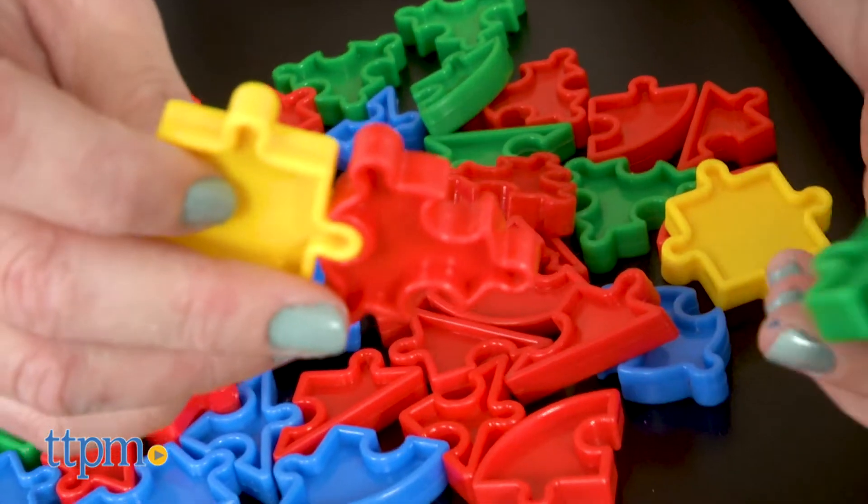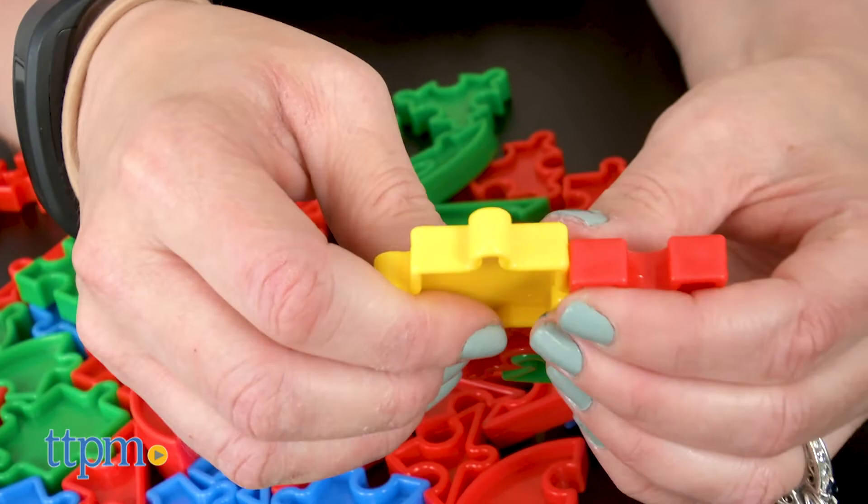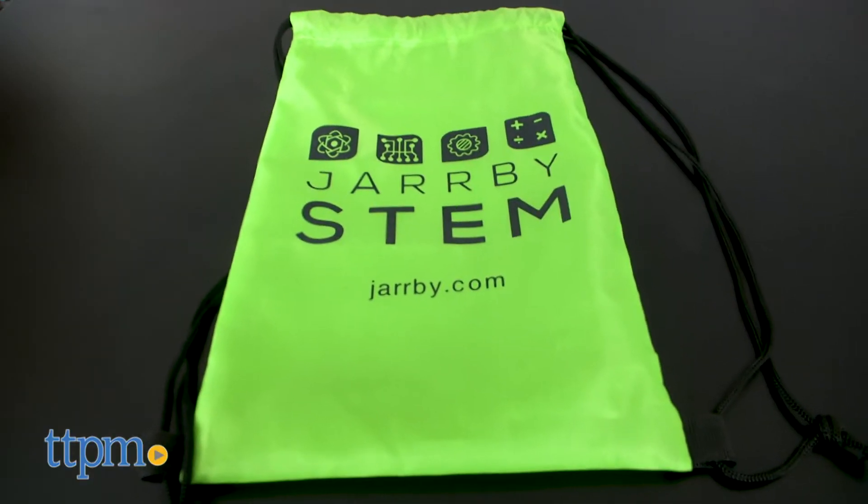The set includes a picture idea sheet of things kids can create, or kids can just use their imaginations and experiment with how the pieces fit together to see what they can build. A storage bag is included for easy cleanup.